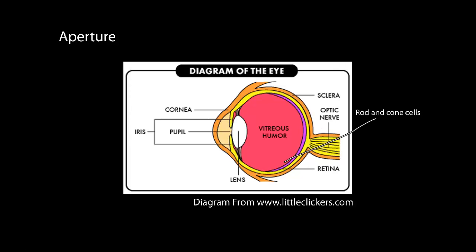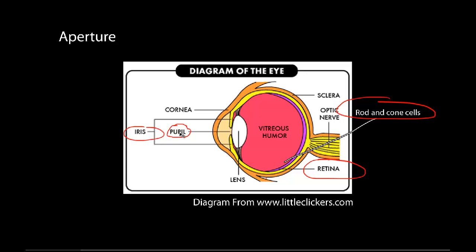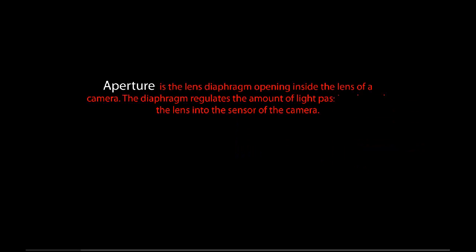We're going to start with each one of them. I'm going to use this diagram of the eye — I know it feels more like a biology class, but once you understand the way this works you'll understand your camera. So from this diagram we've got the cornea, the iris, the pupil, the lens, the retina, and the rod and cone cells. I'll explain what all of this means.